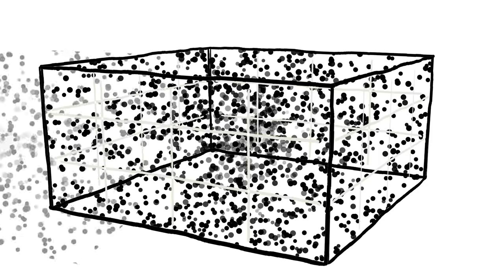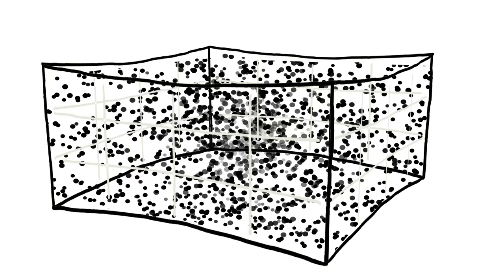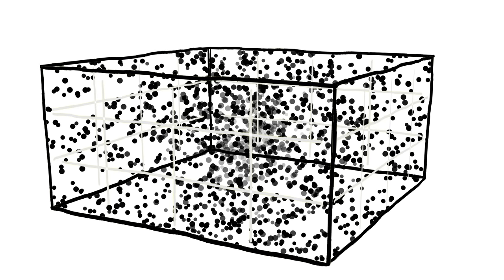If the universe had just a little bit more mass and energy, space would have curved one way, and if it had just a little bit less mass and energy, space would have curved the other way. But we seem to have just the right amount to make space perfectly flat, as far as we can tell.